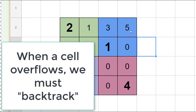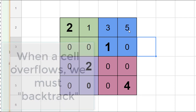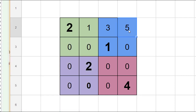What does backtracking mean? We're going to take this five and replace it back with a zero, and then we're going to go back to the last cell that was not fixed.